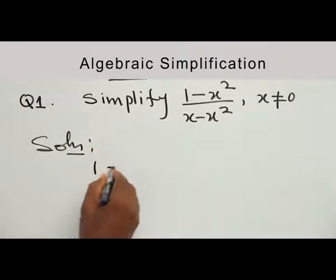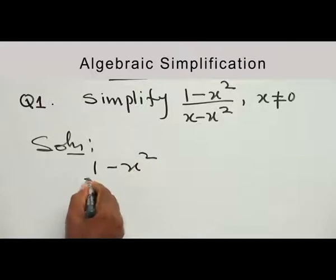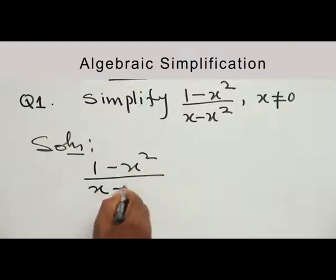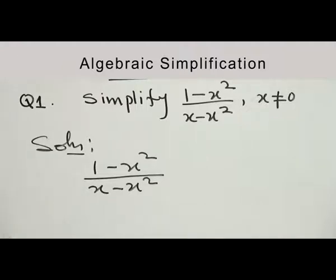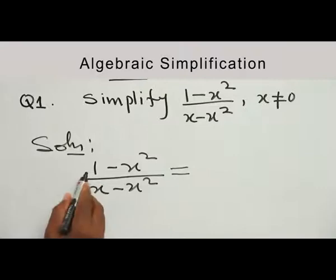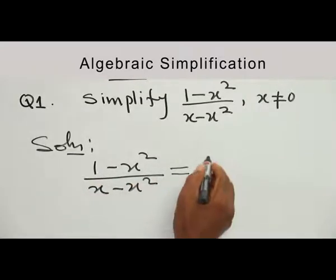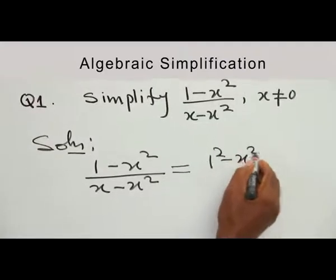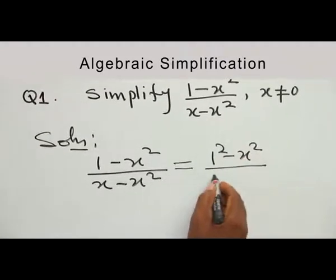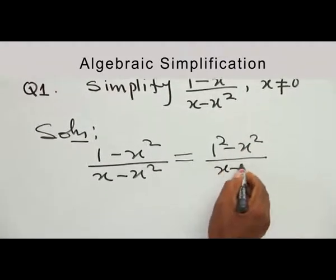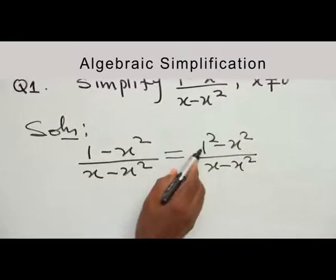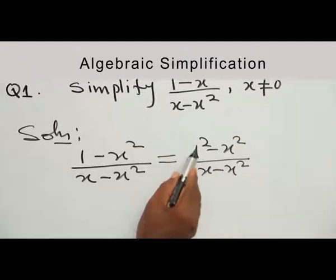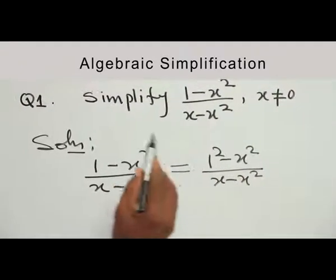Question number 1: Simplify (1 minus S squared) all over (S minus S squared), given that S is not equal to 0. We write 1 minus S squared all over S minus S squared. We have done factorization previously, so this calls for factorization. To factorize the numerator, it is equal to 1 squared minus S squared. Note that 1 squared and 1 are the same.